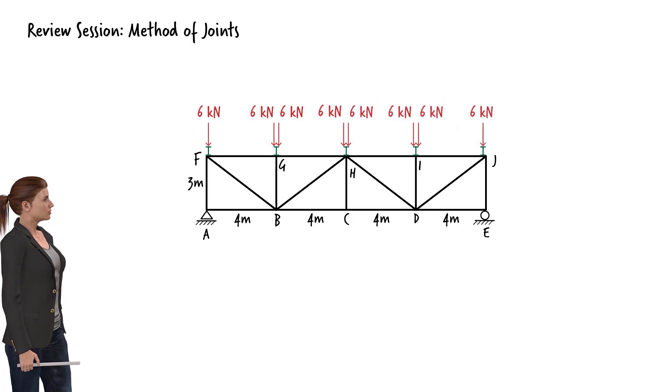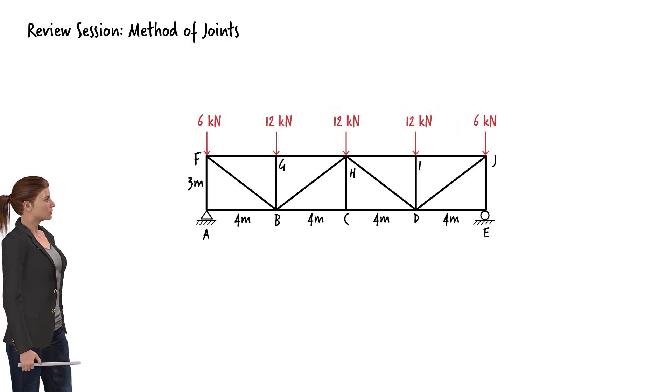Therefore, the truss loads become the joint loads shown. As you can see, we successfully translated the distributed load into joint loads. Now we can turn our attention to the analysis of the truss itself. For this analysis, I am going to use the method of joints.